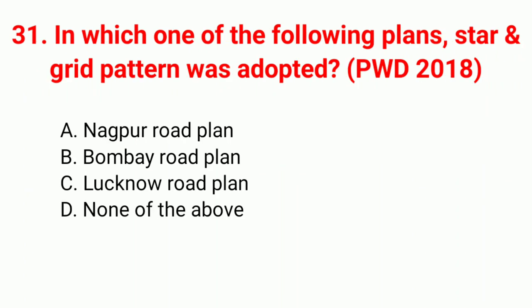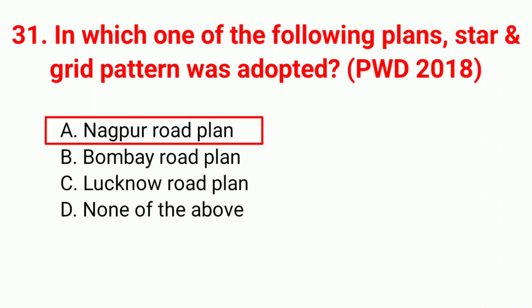Question 31: In which road plan was the star and grid pattern adopted? Correct answer option A: Nagpur road plan.